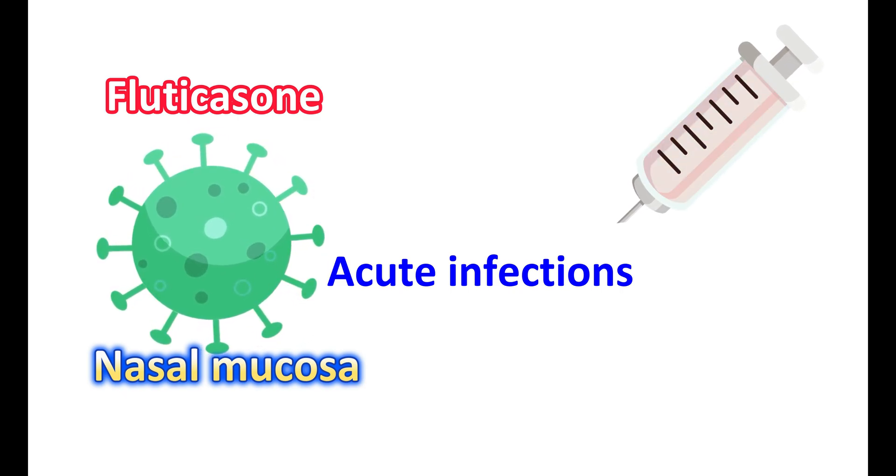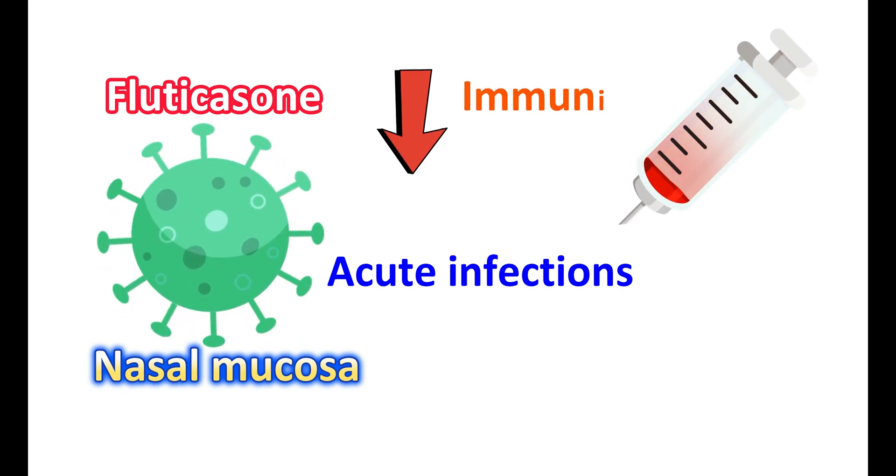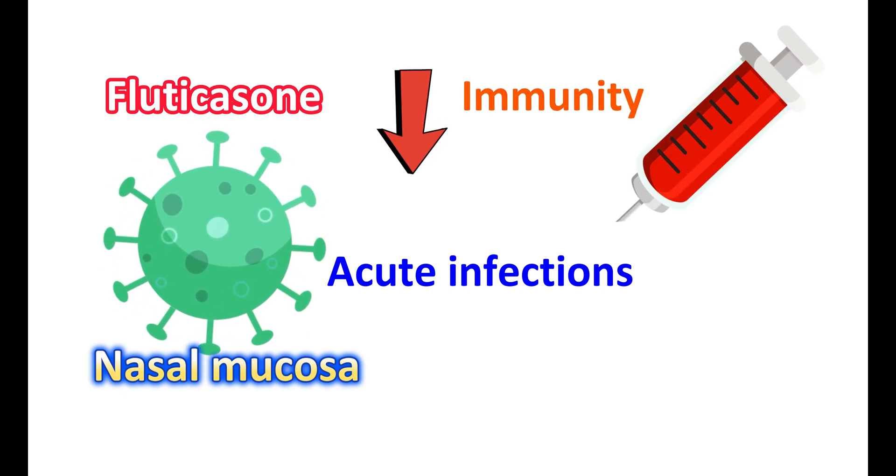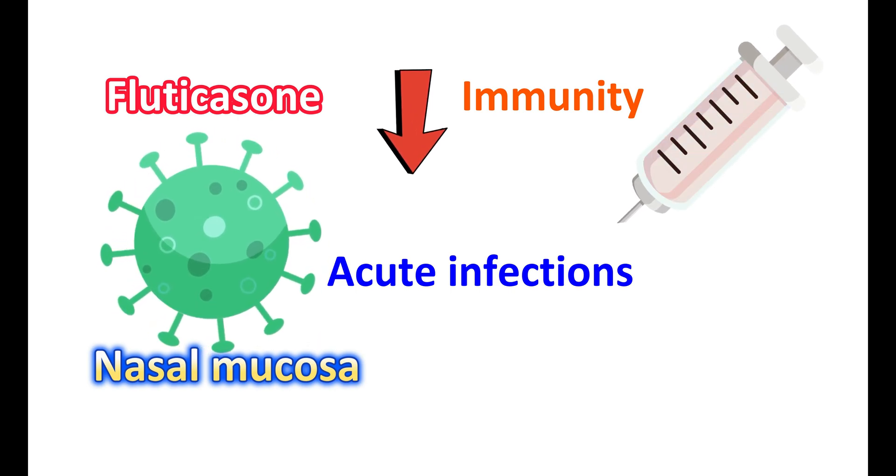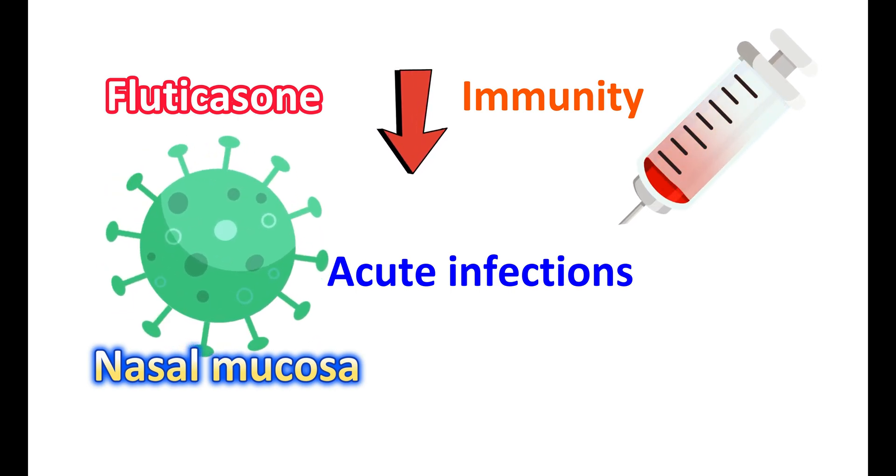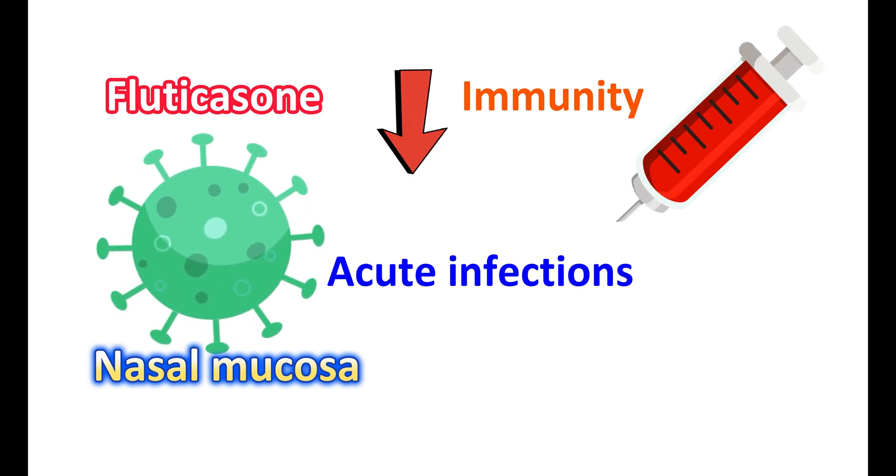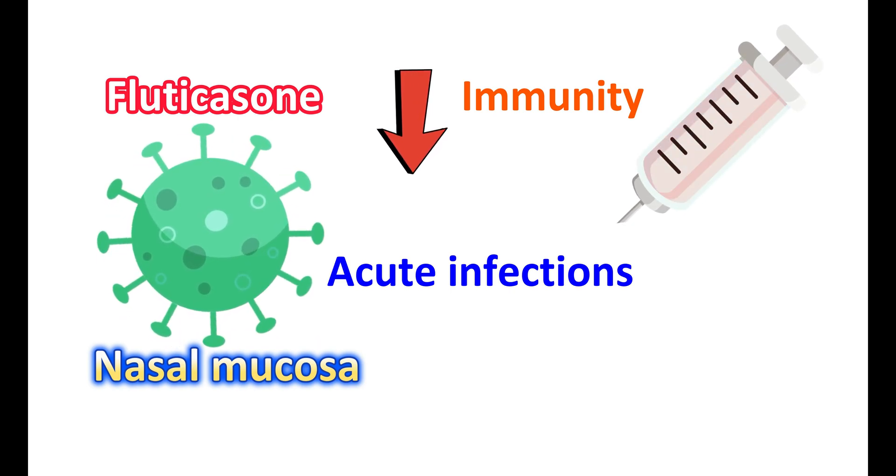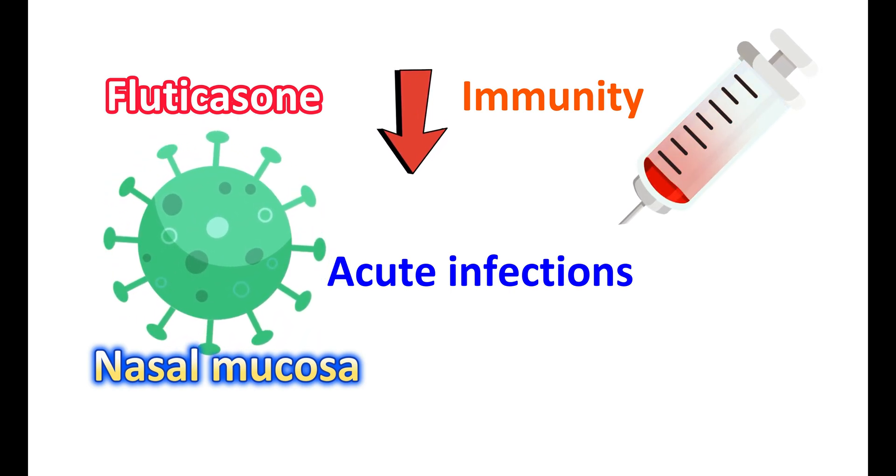Fluticasone is a corticosteroid and it reduces immunity. Therefore, there may be a high risk of developing new infections or it may worsen existing infections. It may increase the risk of chickenpox and measles in people who are unvaccinated or immunocompromised.